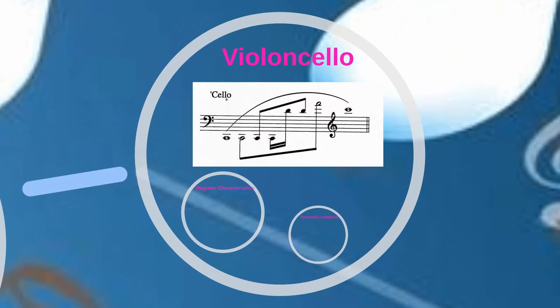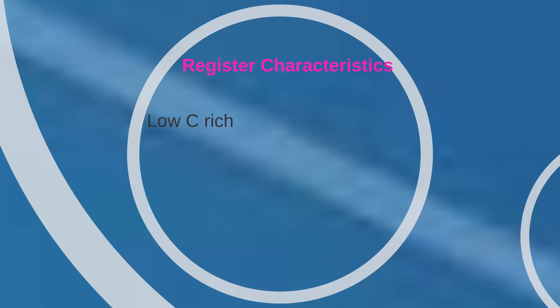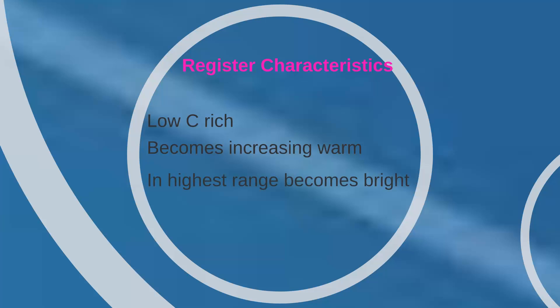The range of the cello is extensive. The lower part of the range is written in the bass clef, while the upper middle area uses the tenor clef, and the extreme upper range is written in the treble clef. You should judge the general tessitura of a given passage in deciding which clef to use — in general, use the clef that will result in fewer ledger lines. The individual tone colors of the four strings make the primary distinction in sound on the cello. The low C is rich and full, and the cello grows increasingly warm and intense as you move up, until it is quite bright in its very upper register.